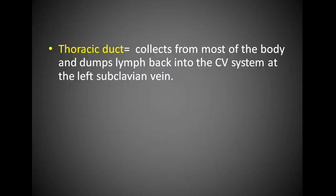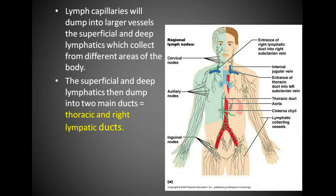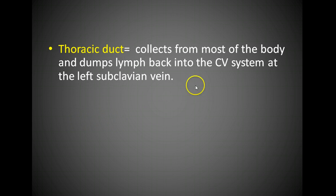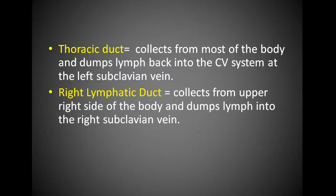The thoracic duct collects from most of the body — it drains everything from the legs, the left side, and the left side of the head. The right lymphatic duct drains from the right arm, right side of the head, and part of the torso. The thoracic duct dumps this lymph — the 15% — back into the left subclavian vein, returning it to the blood supply and to the heart. The right lymphatic duct dumps lymph into the right subclavian vein, which also returns it to the blood supply.